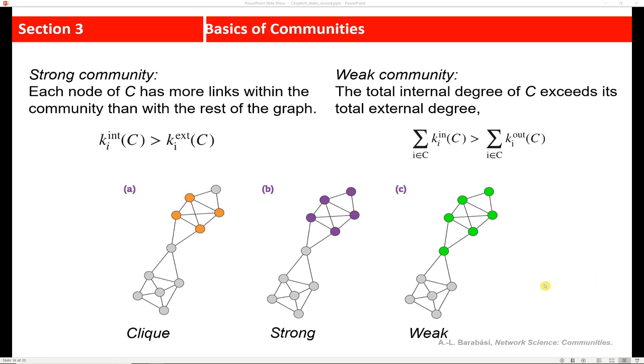So the definition for a weak community is actually a little bit different. We have a case where the total internal degree of the community exceeds its total external degree. So this requirement is actually a little less intense than the requirement for being a strong community. So where we just look at the community as a whole. So if we take the sum of the degree of all the nodes within the community, and it's greater than the degree connections that it has outside of the community, it's still considered a community, but it is weak.